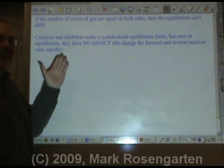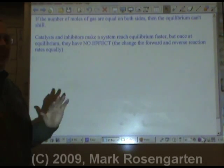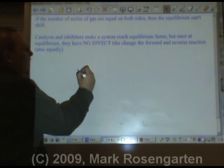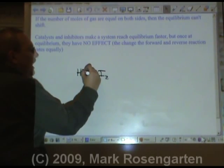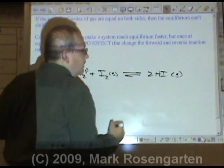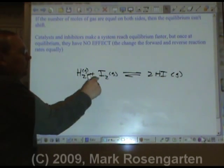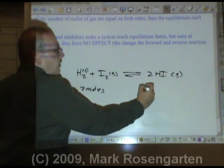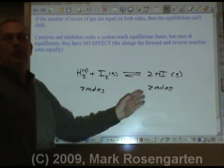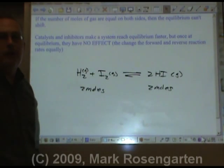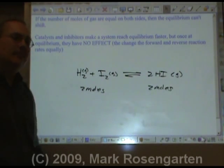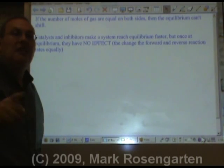Now, if the number of moles of gas are equal on both sides, then an equilibrium can't do anything and it has to live with that stress. For example, if we have H2 + I2 — both gases — forming an equilibrium with 2HI, which is also a gas: this side has 1 + 1 = 2 moles of gas, and this side also has 2 moles of gas. If you increase or decrease the pressure, where's the equilibrium going to go? It doesn't have a way to relieve the extra pressure or bring up the lower pressure. Therefore, the equilibrium just has to suffer in silence. But if an equilibrium can shift, then it must shift.